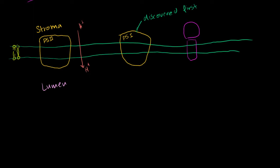In some textbooks you'll also see photosystem II written as P680, and photosystem I written as P700. These numbers come from the wavelength of light that is best absorbed by the chlorophyll in these photosystems. So 680 corresponds to 680 nanometers — that's the wavelength of light this absorbs best. 700 corresponds to 700 nanometers — that's the wavelength photosystem I absorbs best.